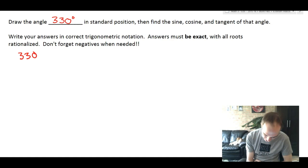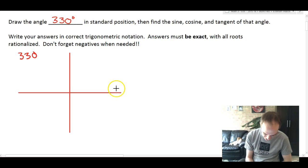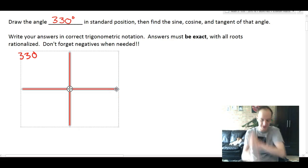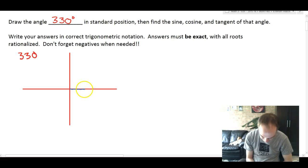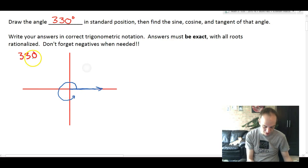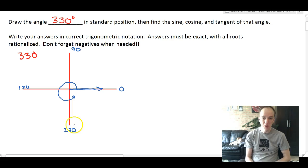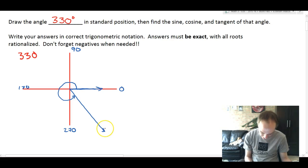When we draw an angle in standard position, you're going to draw an x and y axis. Standard position means that the angle starts on the positive x axis with the initial side, and the angle opens counterclockwise until you've traveled through the amount of degrees it says. This is zero, this is 90, this is 180, this is 270. You have to know those in order to locate this angle 330.